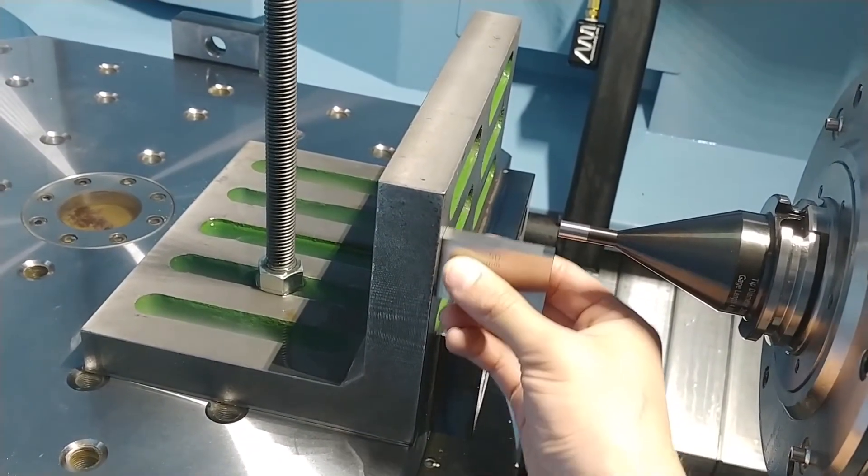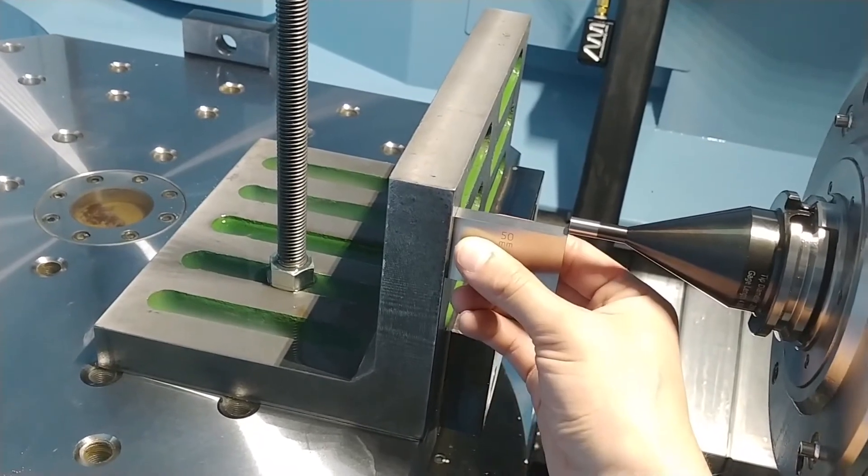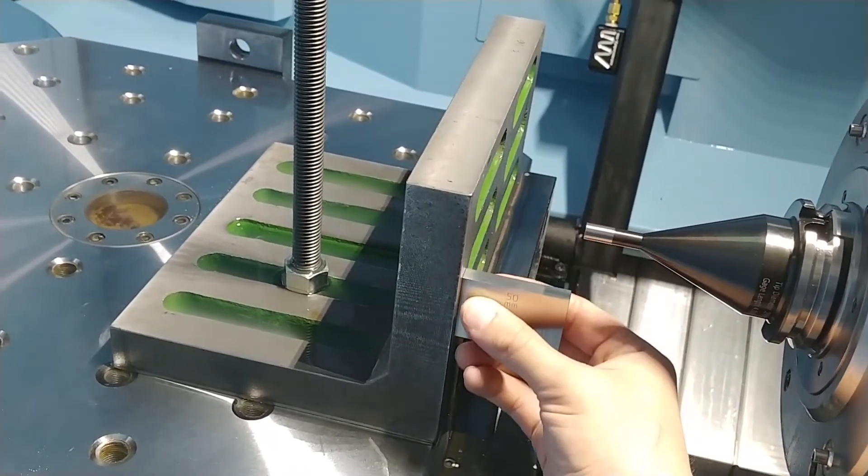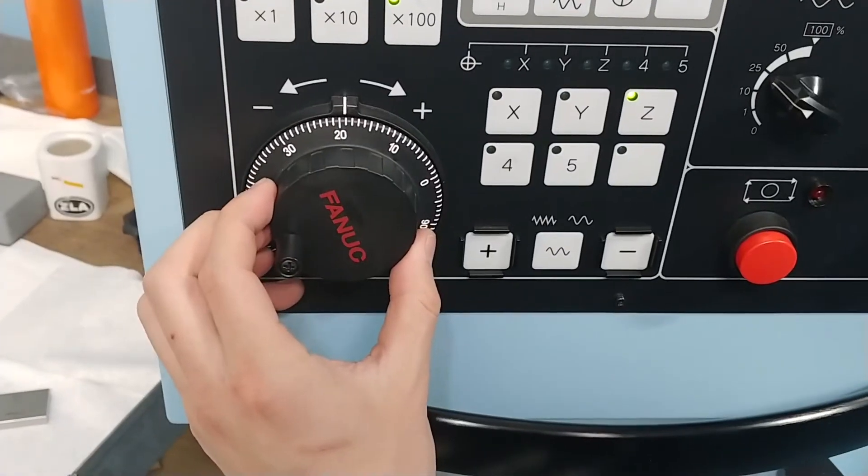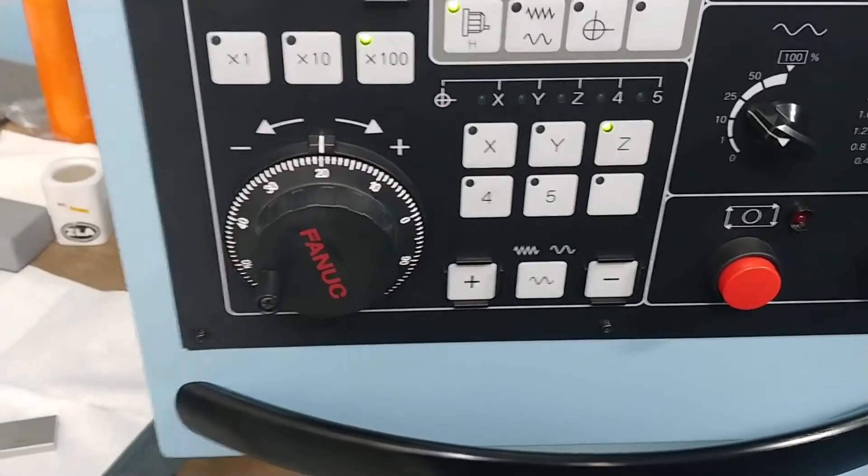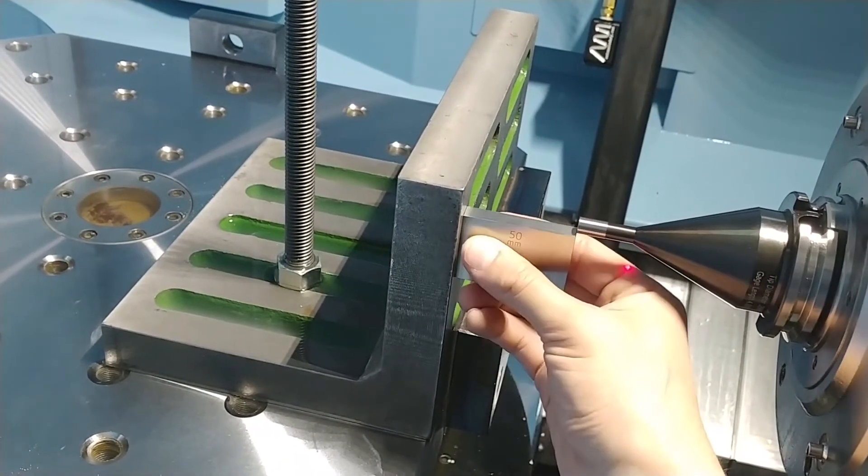With the handle jog increment set to the maximum setting, move the master tool up in Z, one click at a time, attempting to slide the block between the tool and the table after each movement.